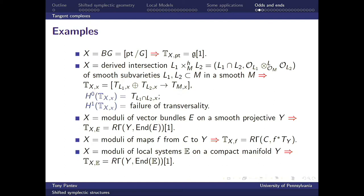You can also look at the moduli of vector bundles — perfect complexes on a smooth projective variety. The tangent complex at a point is just the derived global sections of the endomorphism sheaf shifted by one. For maps from one smooth variety to another, the tangent complex is just the derived global sections of the pushforward of the tangent sheaf. For moduli of flat bundles or local systems on a compact manifold, the tangent complex is the derived global sections of the endomorphism local system shifted by one.